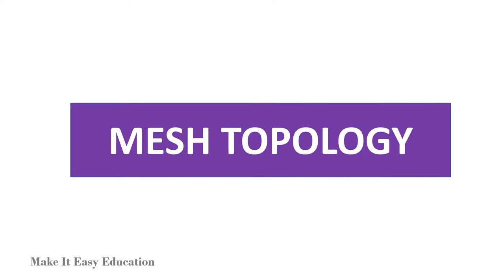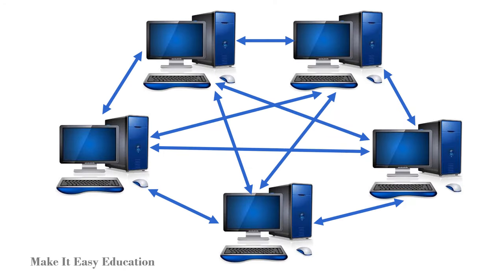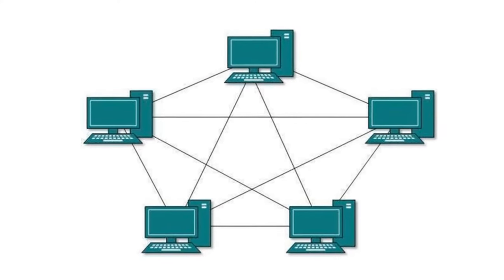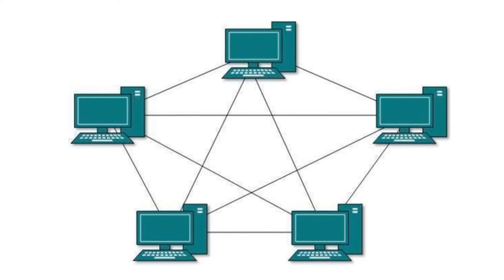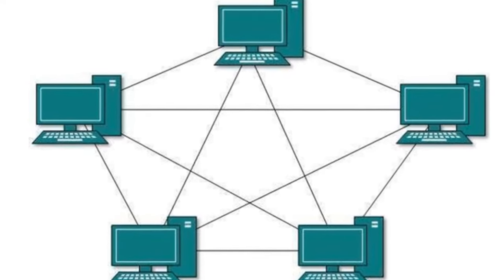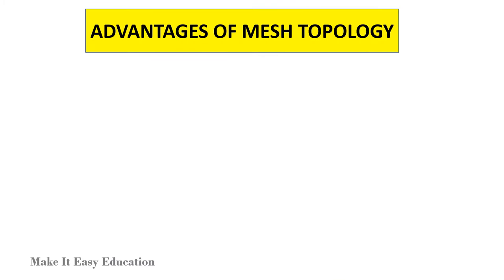Mesh topology. In mesh topology, each device is connected to every other device on the network through a dedicated point-to-point link. If there are N devices in the network, then each device must be connected with N-1 devices of the network.